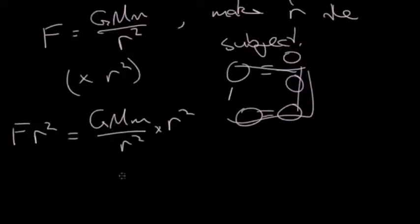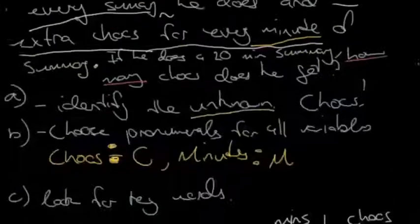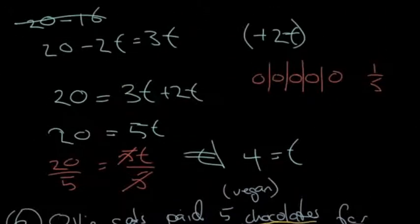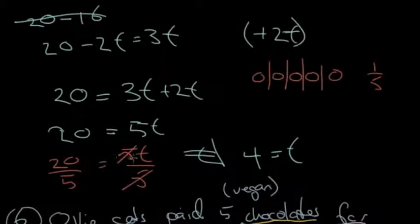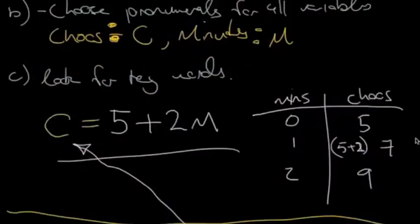And then GMm on R squared times R squared. Well, notice there's no pluses or anything, so we can just cancel. And again, this is very similar to what we did before with our oranges. Looking familiar? We're canceling top and bottom when we've got just multiplications.